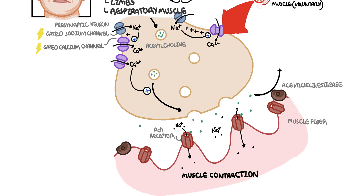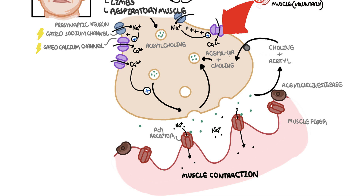Once muscle contraction occurs, acetylcholine is broken down into acetyl-CoA and choline, which gets recycled to make more acetylcholine for the nerve — and the cycle continues. There is another important receptor called the MuSK receptor, which stimulates the expression of acetylcholine receptors. So when you have more acetylcholine receptors, this allows for more acetylcholine binding and therefore muscle contraction.